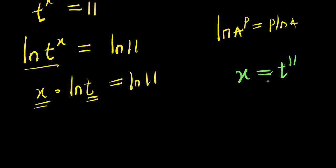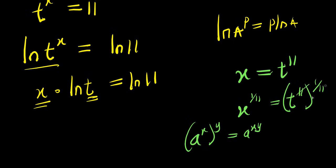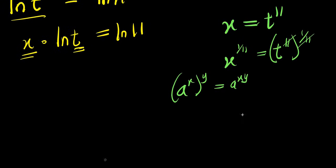I want to isolate t. That means I'm going to multiply the exponent by 1 over 11. So x power 1 over 11 equals t power 11 raised to the power 1 over 11. Using the rule that a power x raised to power y equals a power x times y, the 11s cancel, giving x power 1 over 11 equals t.